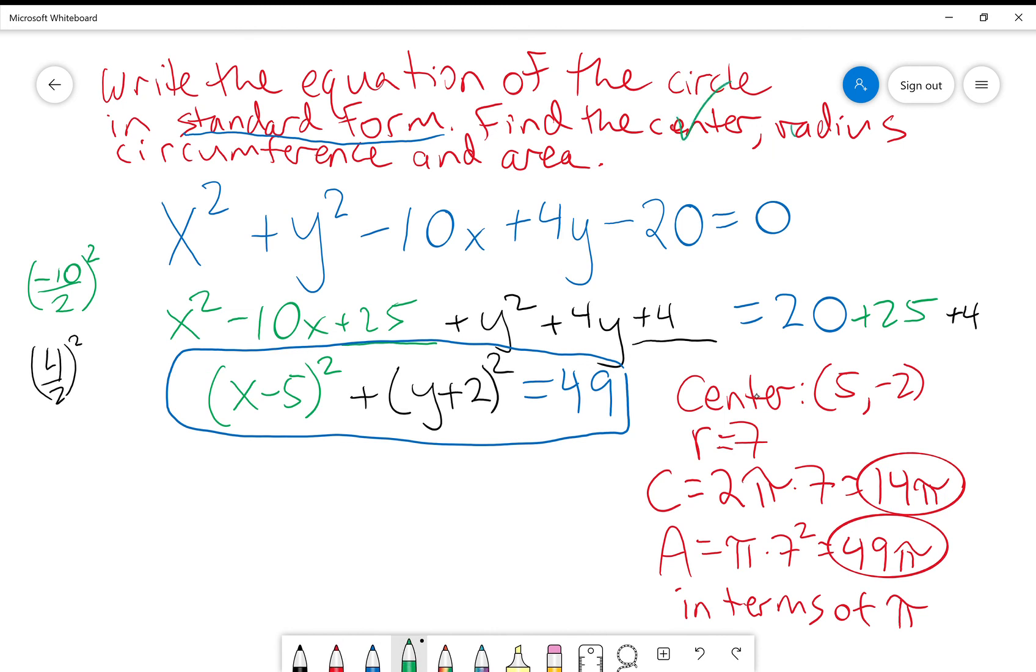It looks like we've got everything we wanted in this problem. We found our center. We found our radius, circumference, and area, and we've got our standard form. I'll put a check on that, too. We got it all. Awesome. Wonderful. America Freedom. Rock and Roll. Costco.